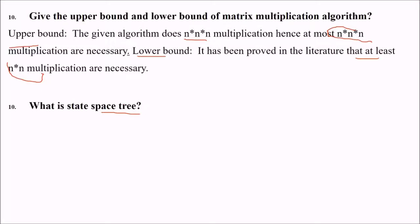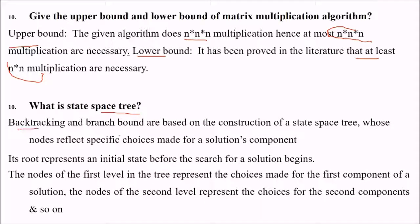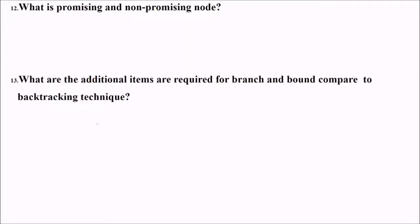What is state space tree? Backtracking and branch and bound problems are based on the construction of state space tree whose nodes reflect specific choices made for solution components. Its root represents the initial state before the search begins. The nodes of the first level represent choices made for the first component of the solution, and nodes of the second level represent choices for the second component, and so on.